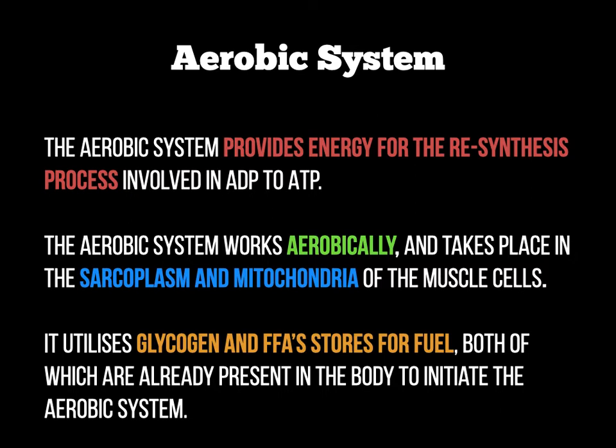The fuel storage needed for this energy system has two aspects. The main fuel we use is glycogen, which we gain through food intake or sports drinks such as isotonic drinks — very much the same as the lactic acid system. However, this system can also use what we call FFAs, which stands for free fatty acids, so fats. We can use fats to burn in order to create phosphates for fuel. Both glycogen and free fatty acids are already present in the body, so we can initiate the aerobic system.